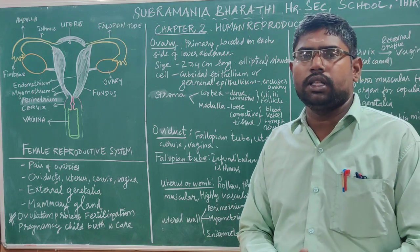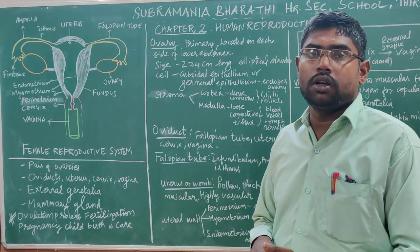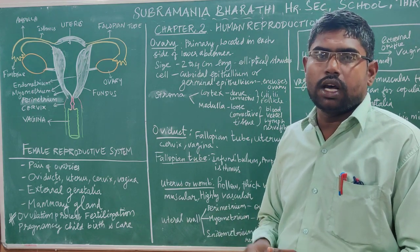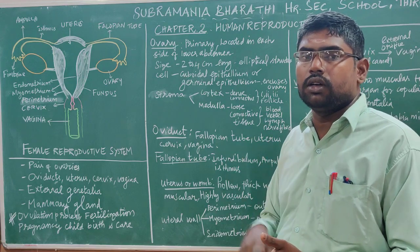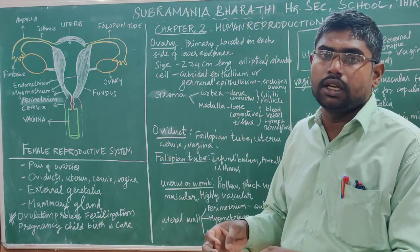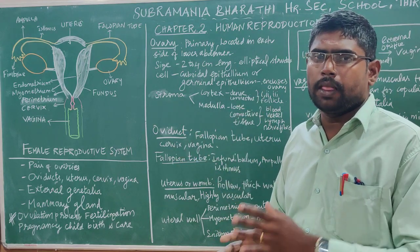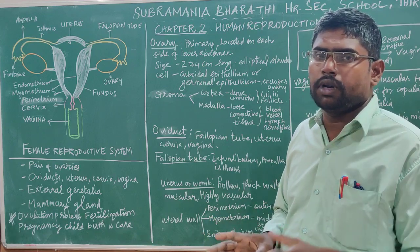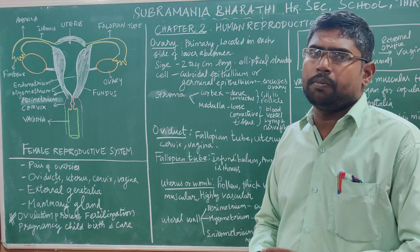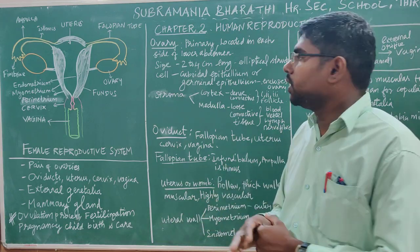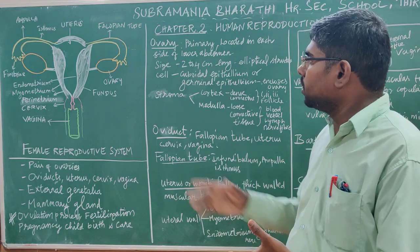Why? Because the male only has to produce a gamete — the sperm. So the function of the female reproductive system is complex, and also the structure is complex. That's why males and females are very different in terms of their reproductive systems.